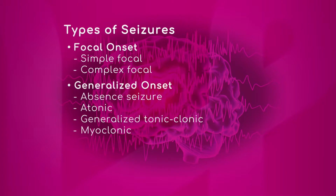Generalized onset seizures cause different forms of seizures, including absence seizures, which are the classic staring episodes we're accustomed to seeing, and atonic seizures, where the body becomes limp. If people fall during atonic seizures, they can incur certain traumas to the head, and that's a major repercussion from atonic seizures.